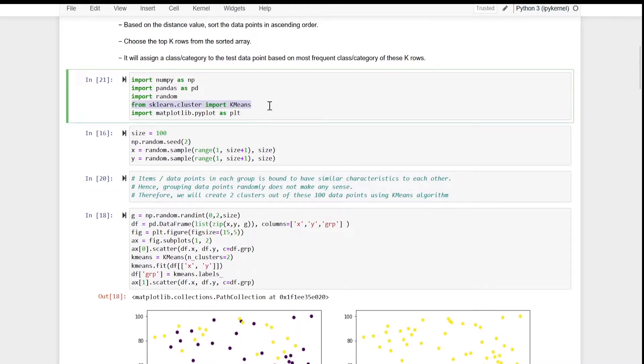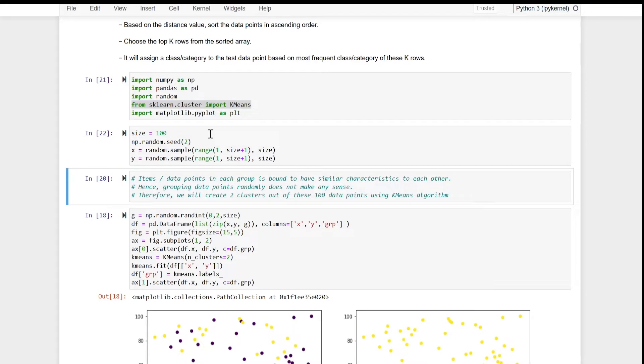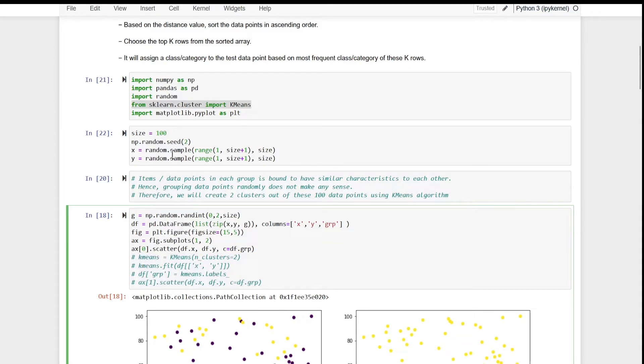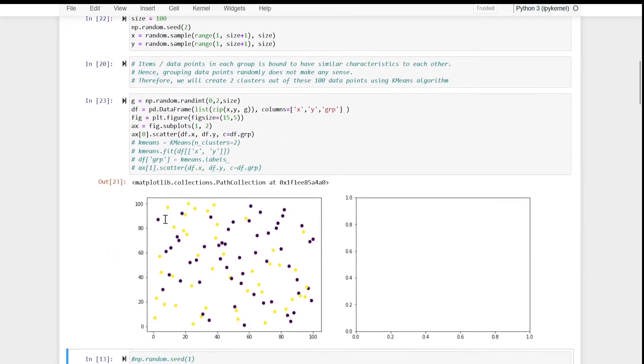So let us import these libraries. The additional library is K means to create clusters. And then we will create 100 data points. X variable, Y variable. Each will have random values. And then here, earlier, we were using this. Having created 100, now we are going to create 100 values 0 and 1, 0 denoting group 1, 1 denoting group 2. And then when we draw a scatter plot, it will look like this, which we are saying is not logical.